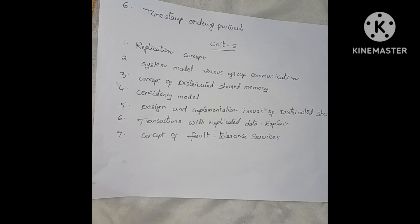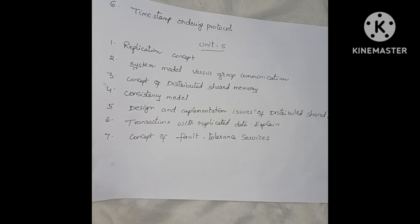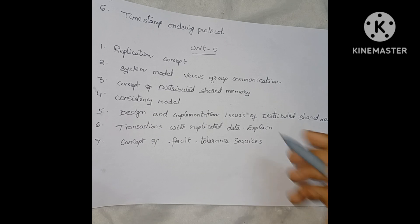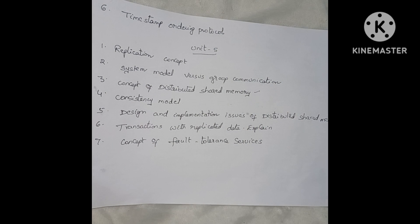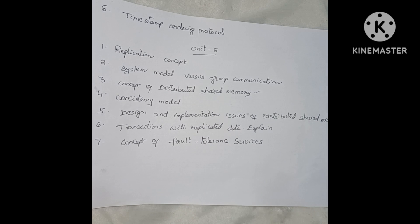Unit 5: read the concept of replication. System model versus group communication. The concept of distributed shared memory is an important question, along with consistency models and design and implementation issues of distributed shared memory. Units 4 and 5 share the concept of distributed shared memory. Also, transactions with replicated data.